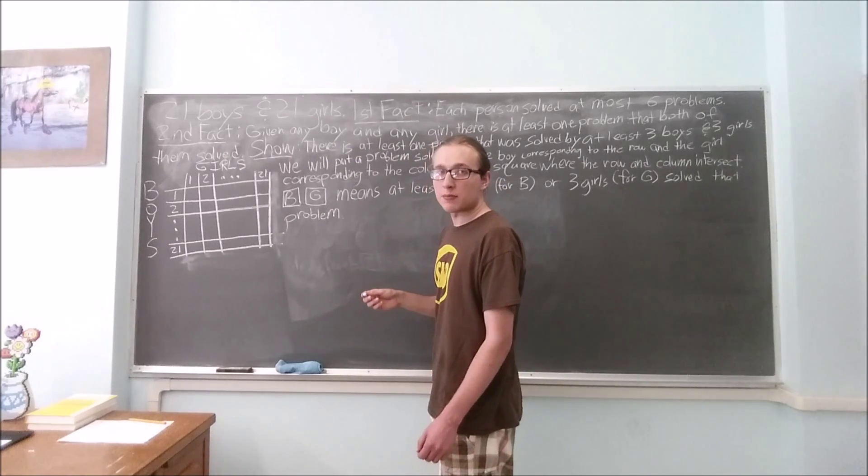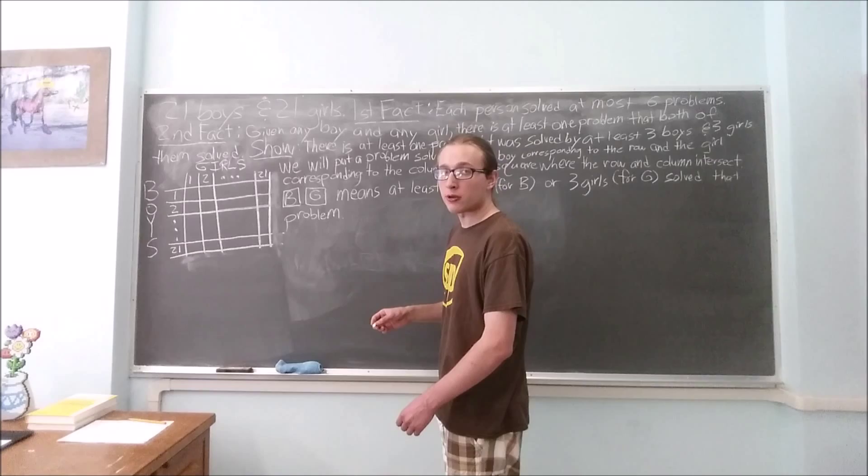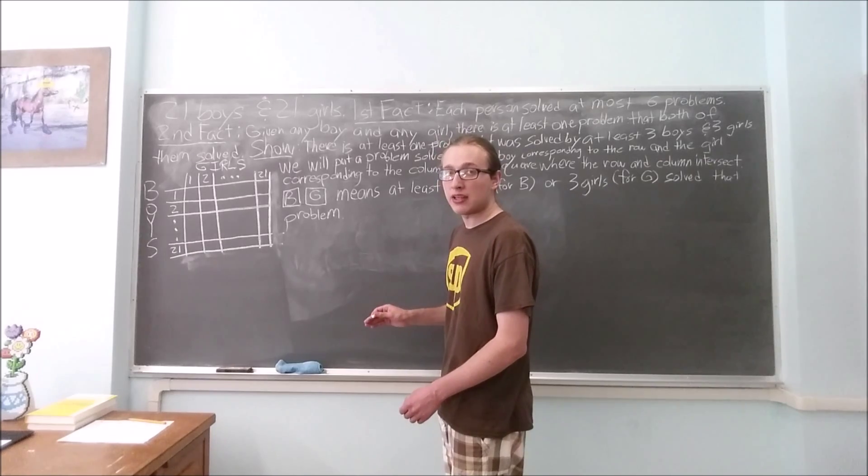Now we are going to make an assumption in order to do a proof by contradiction. What we will assume is that there is no square that has both a B and a G.